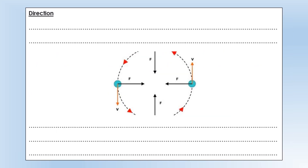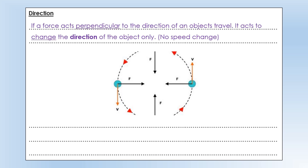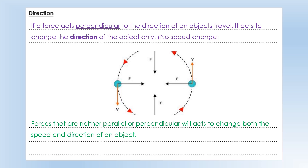The next thing is forces can affect the direction of travel of an object. A specific condition is that if the force acts perpendicular to the direction of travel, or perpendicular to the velocity, it will change only the direction and it won't change the speed. You can see in this scenario: the velocity is downwards, the force is to the right at 90 degrees, so it makes it travel in a circular path, but it doesn't change its speed. Now, if they're neither parallel nor perpendicular — which will be most of the time — both the speed and direction change.